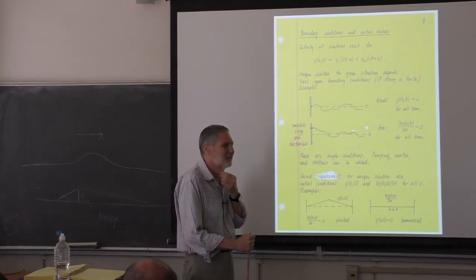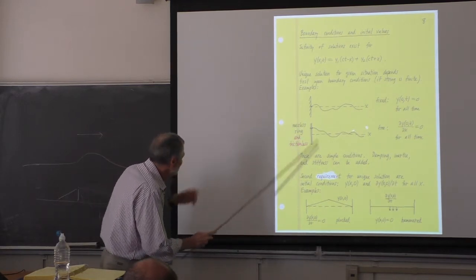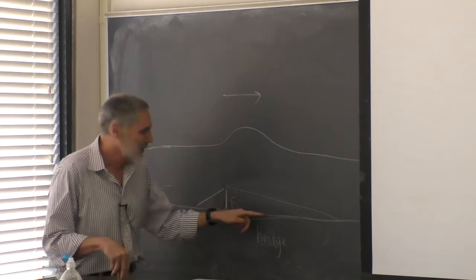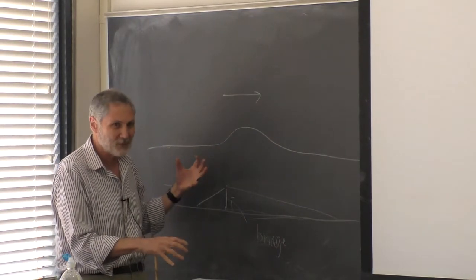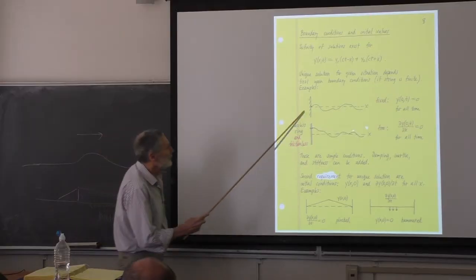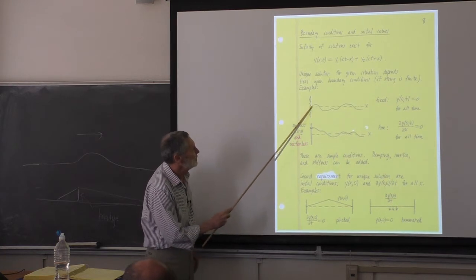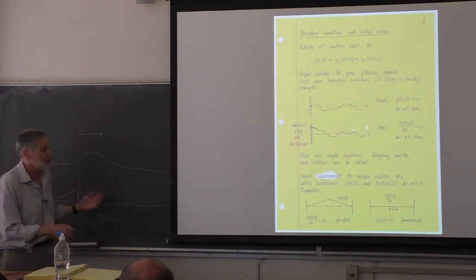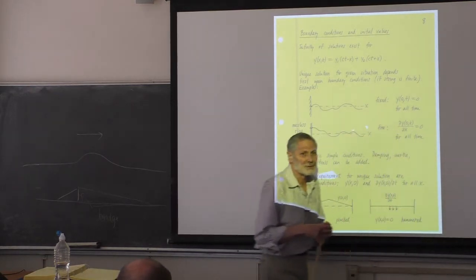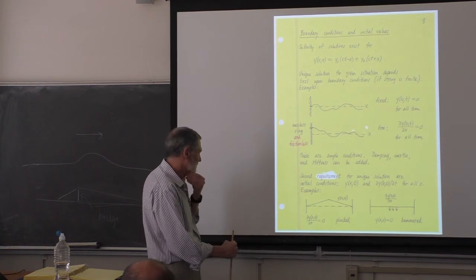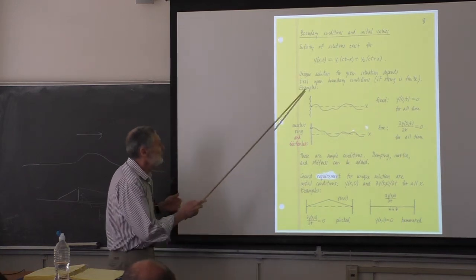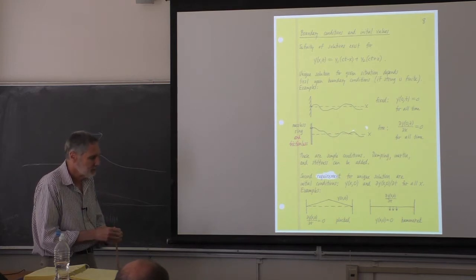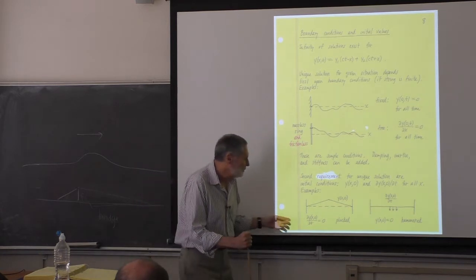We can also physically demonstrate the method of images. I generate two pulses — one from each end — both upright, corresponding to the free boundary image case. They travel through each other, and you can see there's zero slope at the midpoint. For the fixed boundary case, I send in an upright pulse and an inverted pulse from opposite ends; when they meet, the displacement is zero at that point for all time.